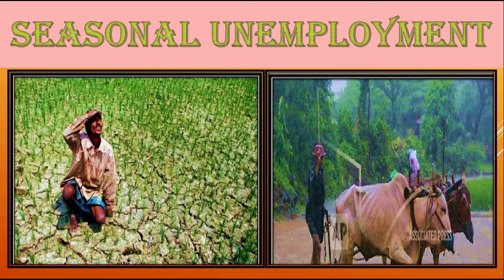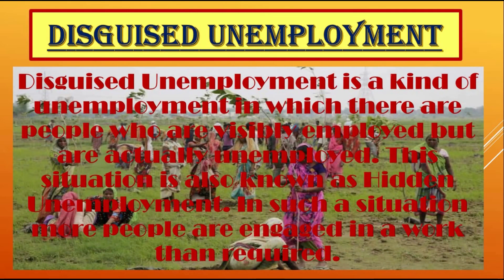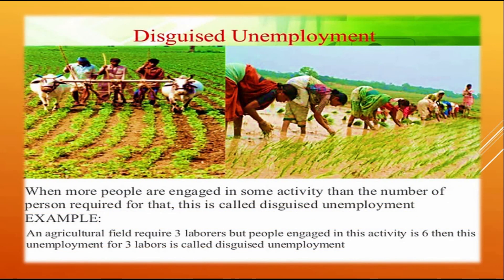The second type of rural unemployment is disguised unemployment. Disguised unemployment is a kind of unemployment in which people are visibly employed but are actually unemployed. In a country like India, with high population pressure, more people are engaged in the agricultural sector than required. Even if some workers are withdrawn from the agricultural sector, the total agricultural output remains the same. Those persons who can be withdrawn without affecting total agricultural output are called disguised unemployed persons.